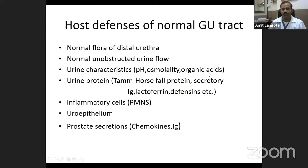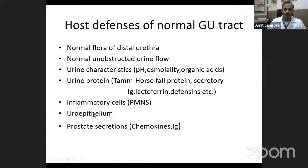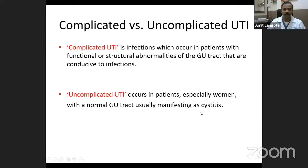The normal genitourinary tract has many different mechanisms to prevent infection. The normal flora prevents growth of other bacteria. Unobstructed urine flow allows bacteria to be flushed out. Acidic urine prevents bacterial growth. Certain proteins and inflammatory cells also prevent infection. The uroepithelium is resistant to bacterial infections, and certain chemokines and immunoglobulins in the prostate also prevent infections in the urinary tract.